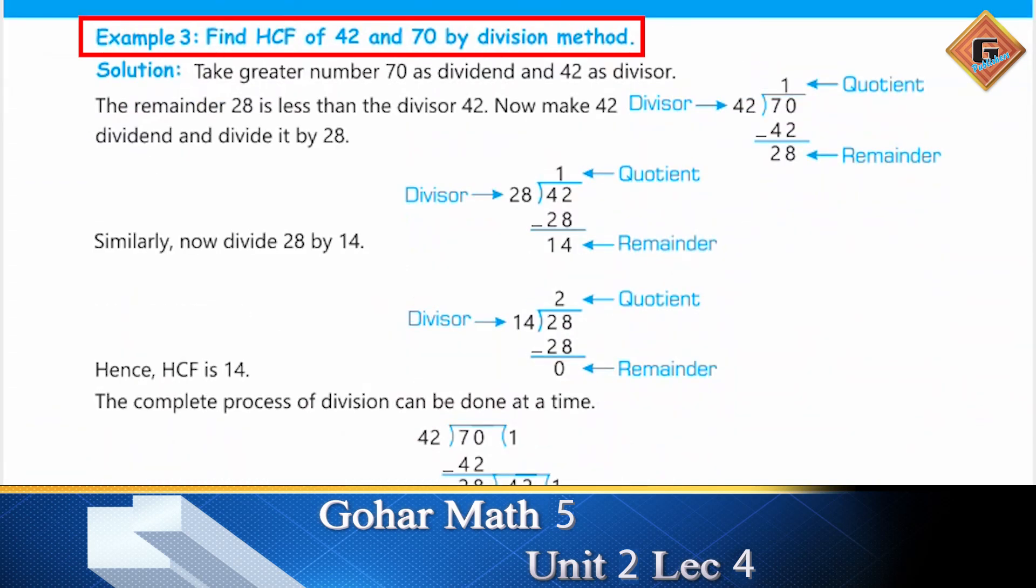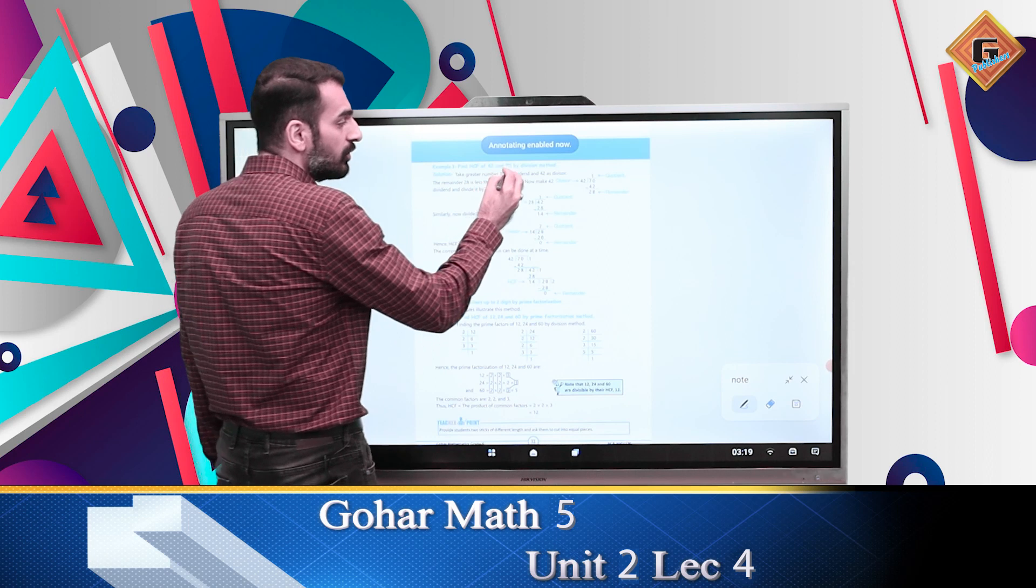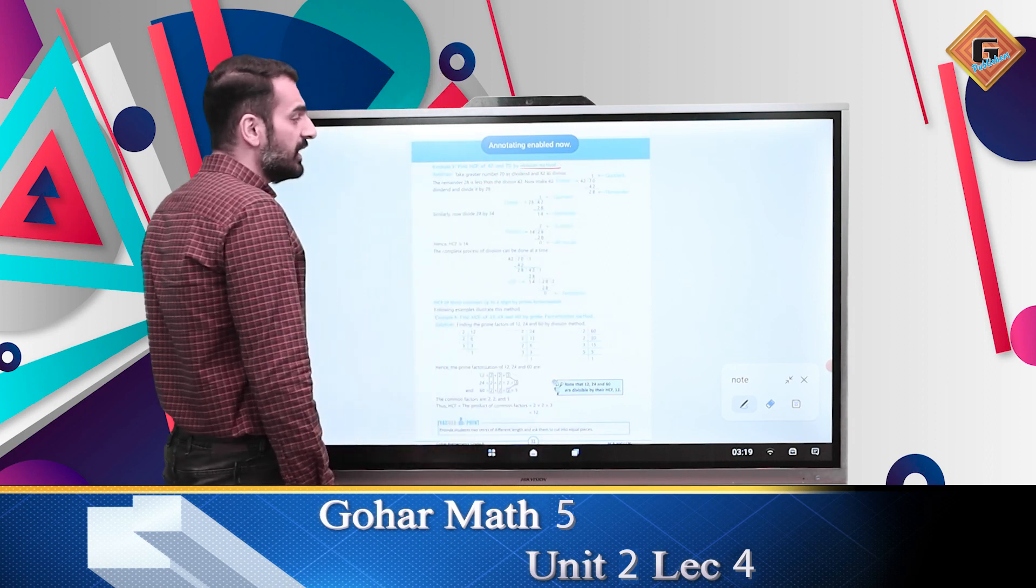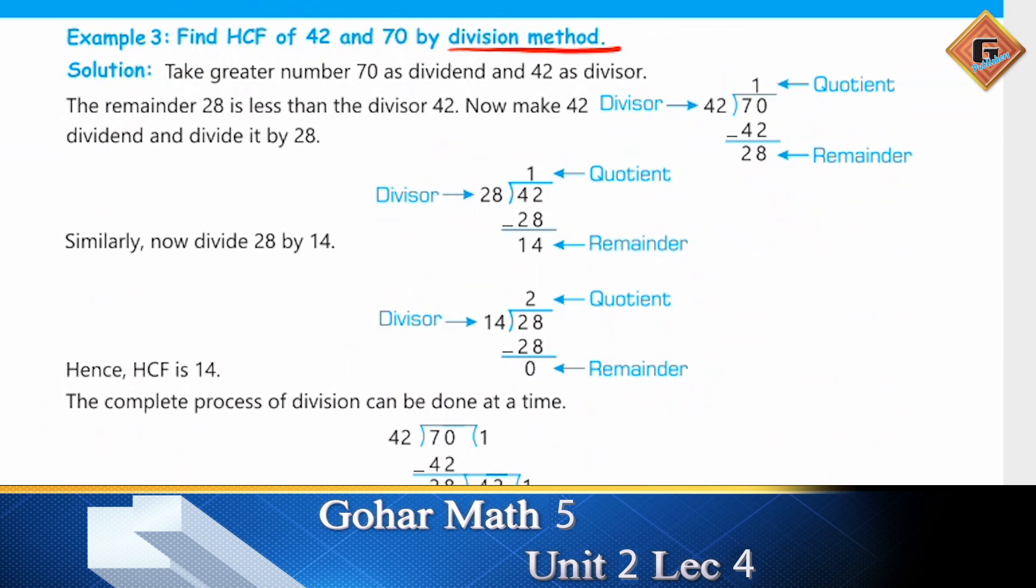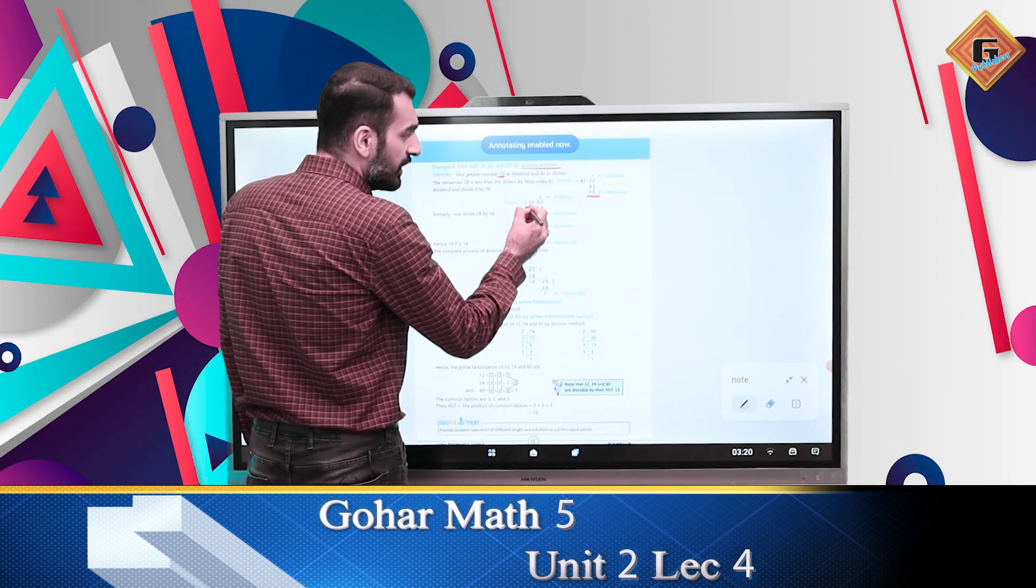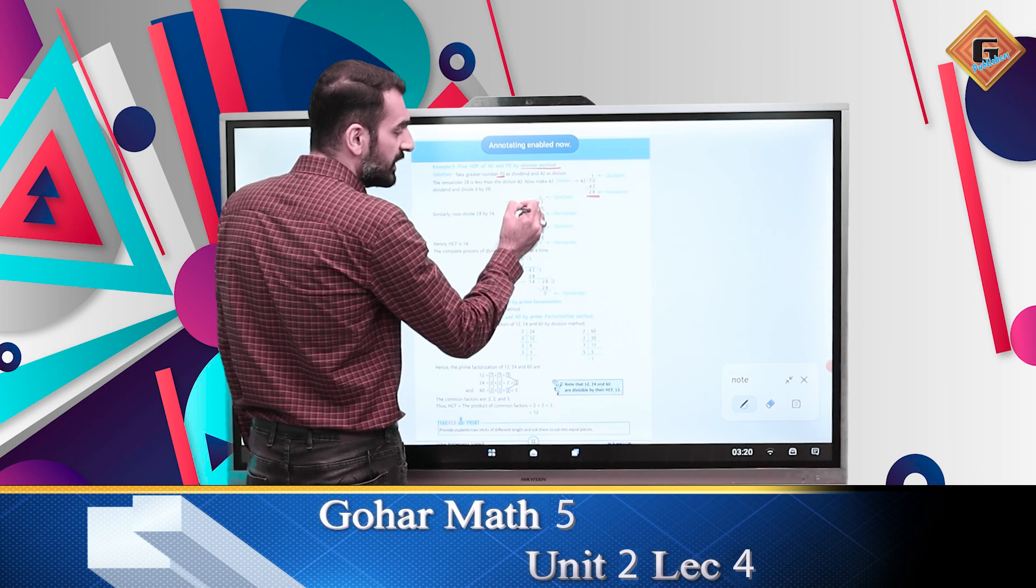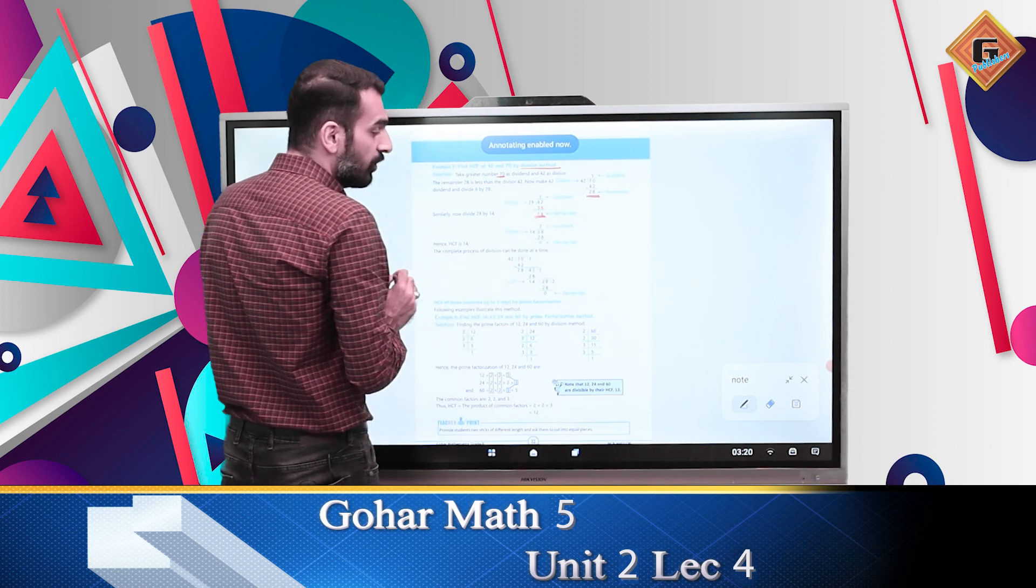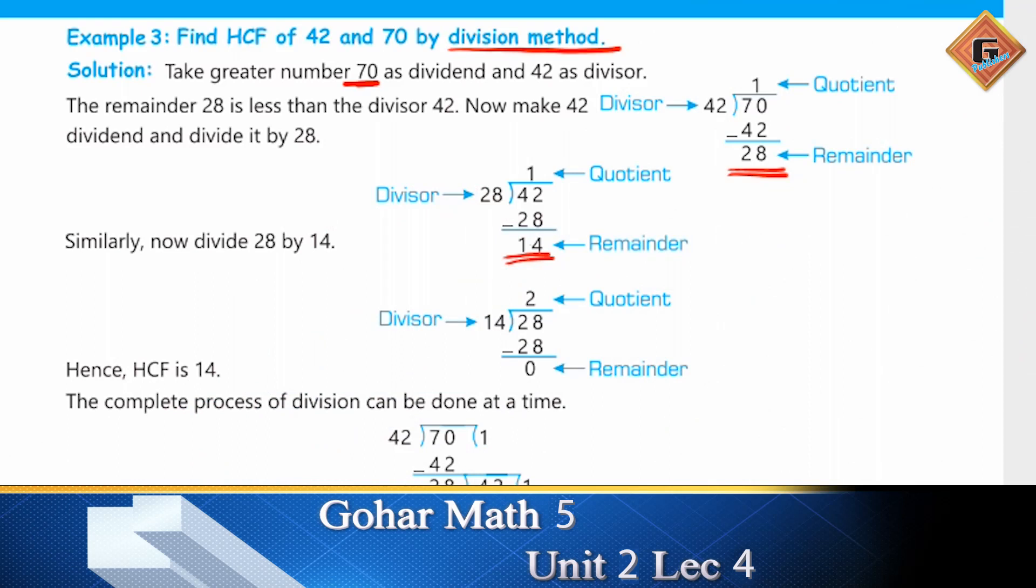Find the HCF of 42 and 70 by division method. We start by dividing 70 by 42. The remainder is 28. Now we divide 42 by 28, which gives us 14. Now we divide 28 by 14, and we get remainder 0.